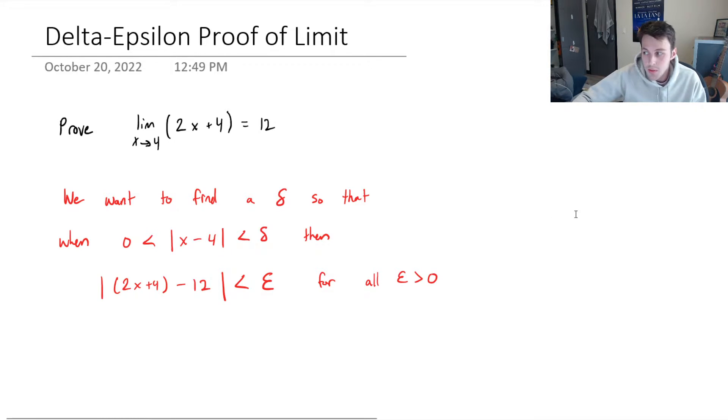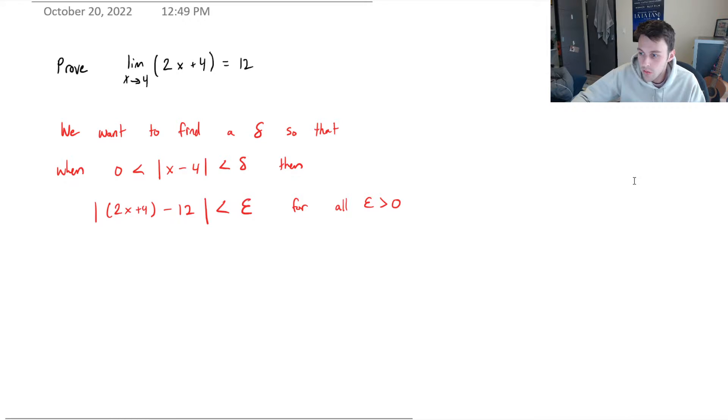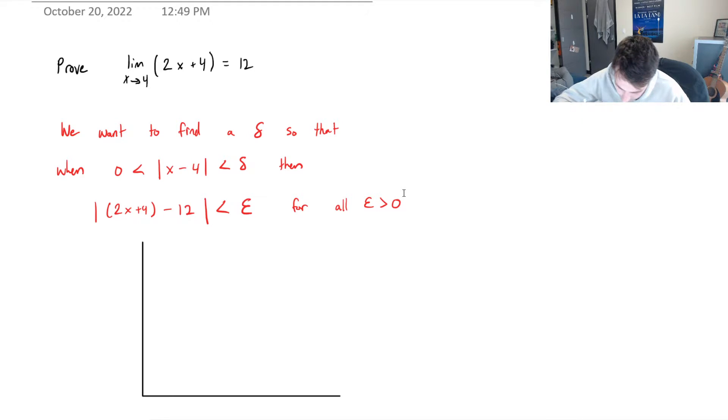And that doesn't make a whole lot of sense right now. I'm much more of a visual person, so let me try to explain this a bit with a little visual. So let's say that we've got our x and y axes here. This is y, this is x. And we know that 2x plus 4 is going to be a linear function. It's going to look something like this. This is 2x plus 4.